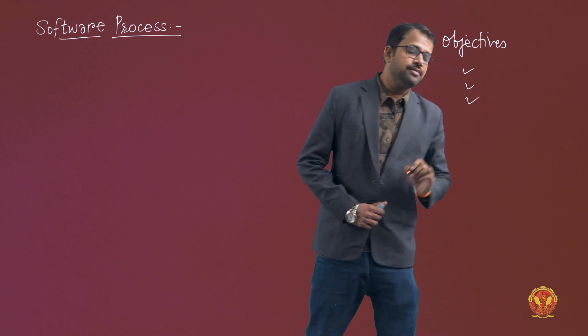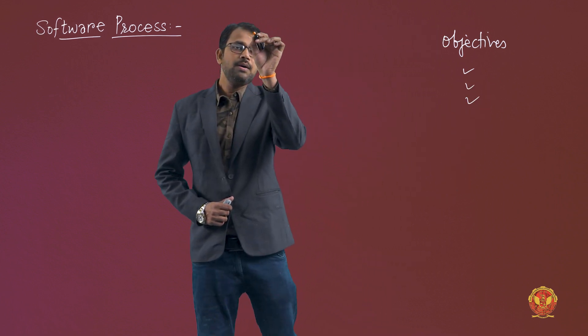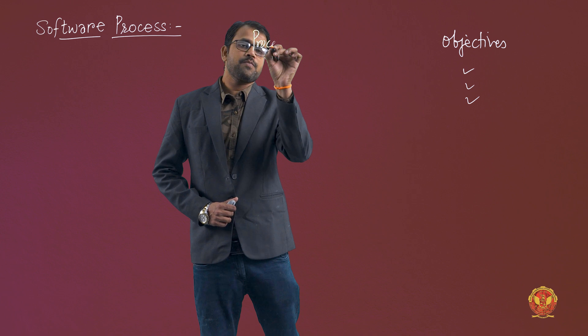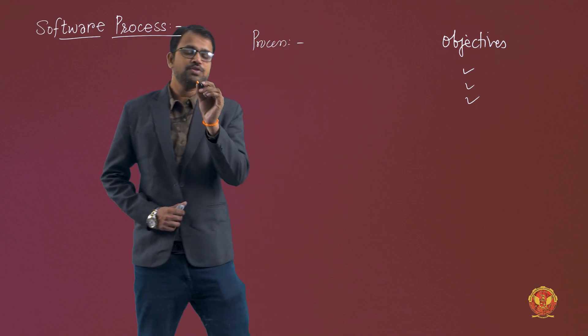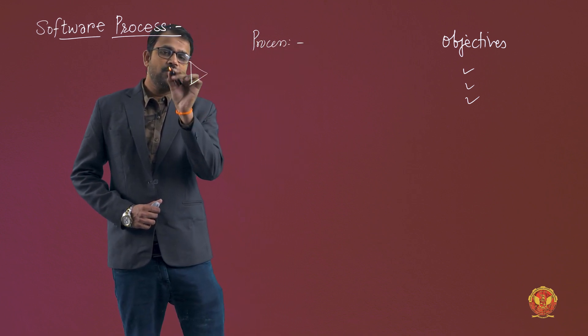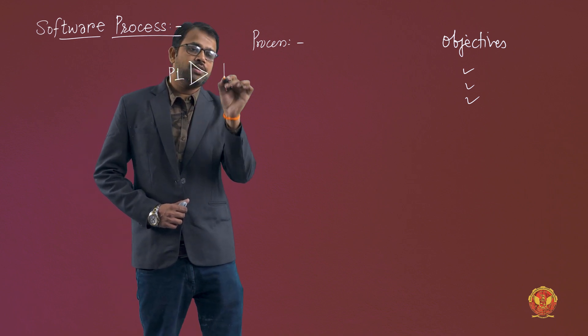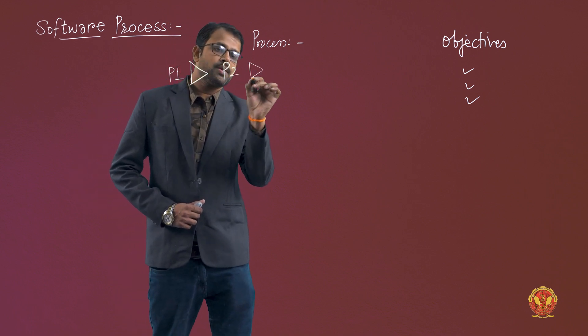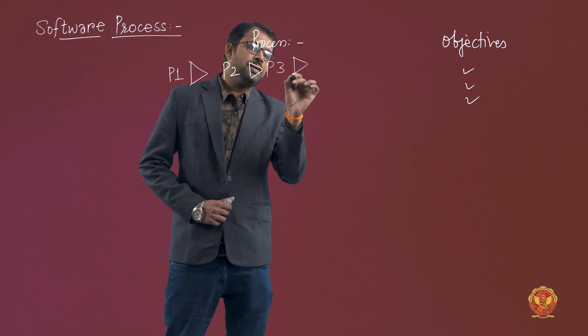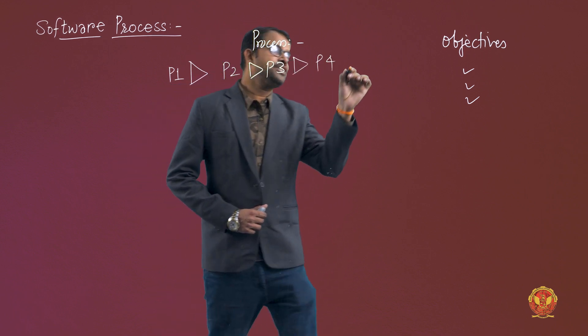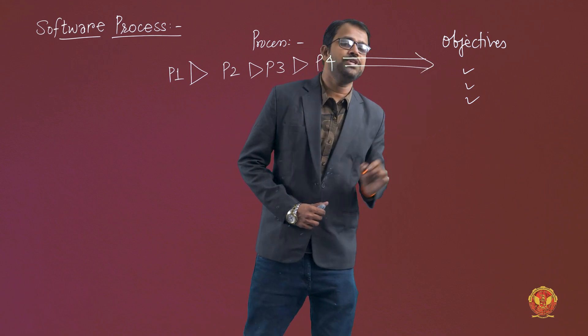So let's suppose we have some objectives. To accomplish these objectives, we need to follow a process. So you can visualize that process which comprises of some steps like P1, P2, P3, and P4. And then we reach to these settled objectives.